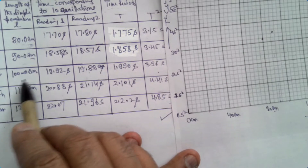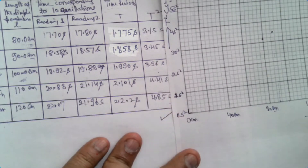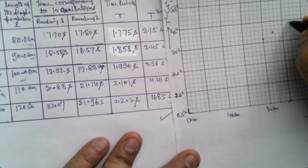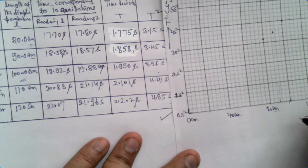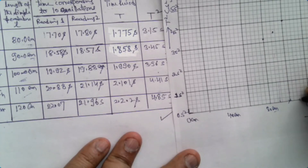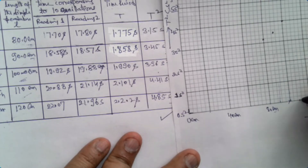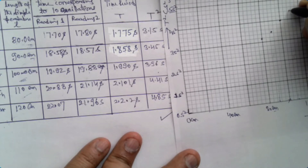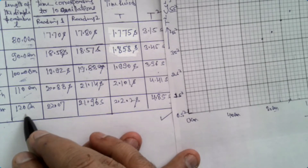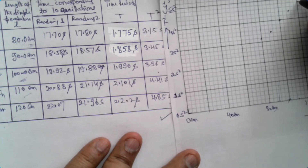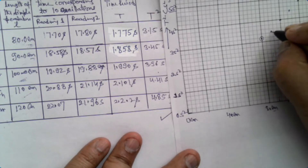Third point: L = 100 cm, T² = 3.96 s², very close to the 4 s² mark. Fourth point: L = 110 cm, T² = 4.41 s² — this is 110 cm on the x-axis, approximately two divisions above 4.0 on the y-axis. Fifth point: L = 120 cm, T² = 4.8 s², slightly above the 4.8 mark. These five points are now plotted on the graph.